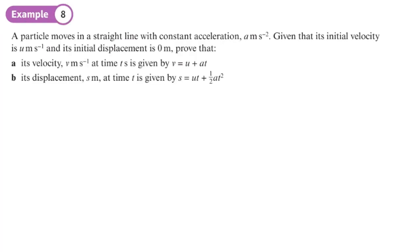Okay, a particle moves in a straight line with constant acceleration a. Given that its initial velocity is u and the initial displacement is zero meters—it's at the origin—prove that its velocity v at time t seconds is given by v equals u plus at. We're told it's got a constant acceleration.